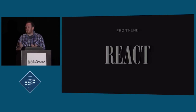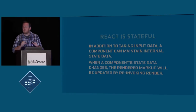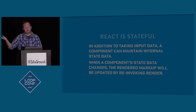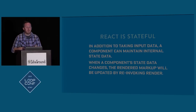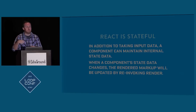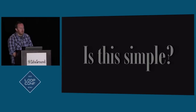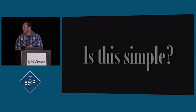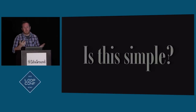On the front end, we look to React — a really slick way to update content. The highlight I want to talk about is React being stateful. From the React front page: in addition to taking input data like a response from a JSON API, a component can maintain internal state data. When a component's state data changes — like your request to the JSON API coming back differently — the rendered markup will be updated by re-invoking render. So all we have to do is set up a little loop to fetch content from the JSON API and publish it to the page. As soon as it changes, it will re-render the results and we have a live blog.